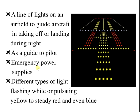At the time of an emergency, we use different lights — such as flashing lights, pulsating yellow to steady red, and even blue lights. Various colors including yellow, red, blue, and white lighting are used for different signals.